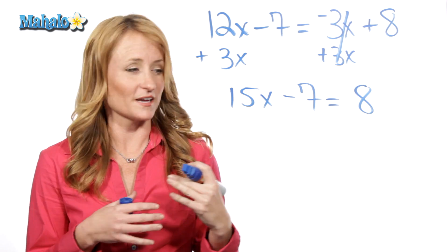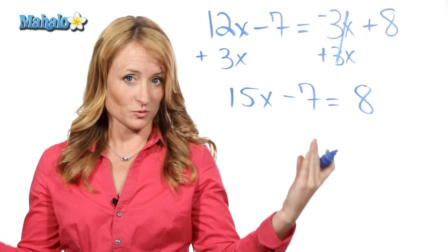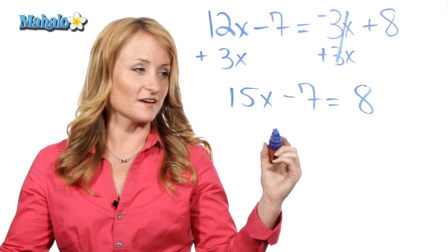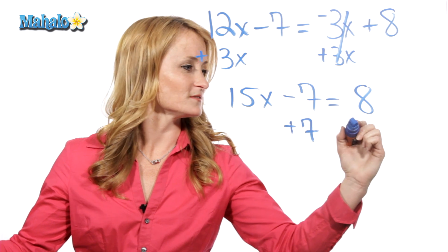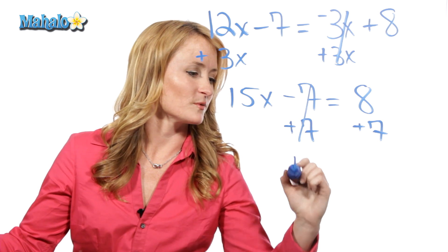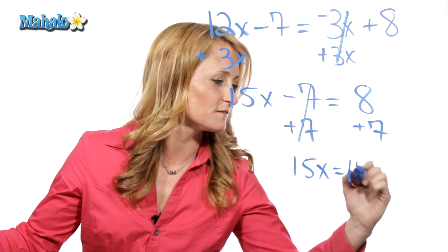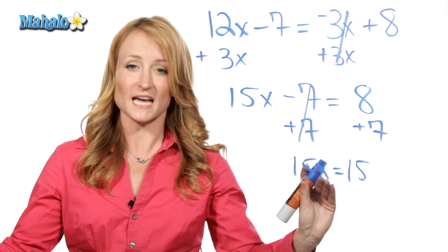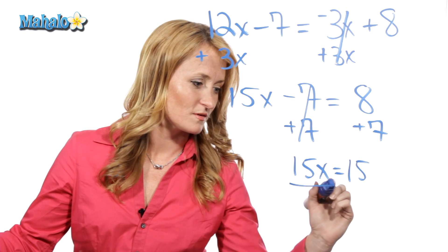Now, this looks like all the other equations you've done when you're solving with a variable on one side. So, continue solving as you already know how. Let's get rid of this 7, and the opposite of subtract 7 is add 7 to both sides. So, we're left with 15x equals 8 plus 7 is 15, and now this is 15 times x.